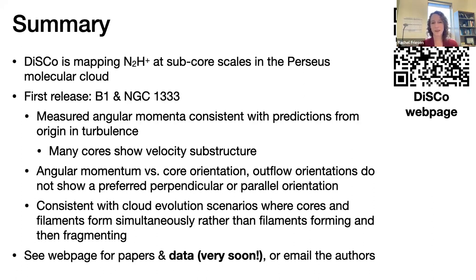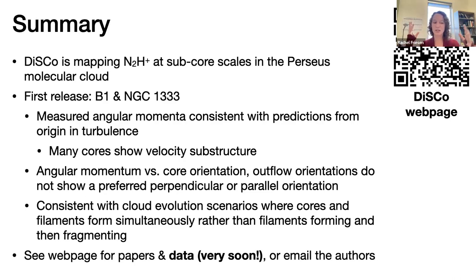Q&A: Can you be more specific about the nature of the turbulence said to be the origin of the specific angular momentum trend? I'd refer to the Burkert and Bodenheimer paper. Broadly, this is turbulence generated on large scales that cascades down to smaller scales. When you have turbulent gas forming cores, and you analyze velocities in the cores treating them the same way we do in observations, you can get a power-law trend of 1.5. For the specific nature of the turbulence, I'd have to go back to that paper.